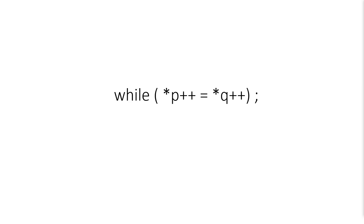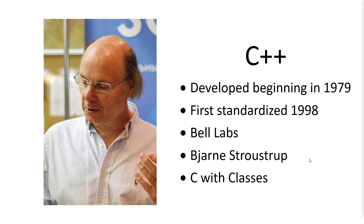Programmers could even suggest the use of particular CPU registers — I thought that was fascinating. Following the development of C, Bjarne Stroustrup developed C++ beginning in 1979, based on C. It was first standardized in 1998, and we've seen several other standardized versions adding new features. He was working at Bell Labs and was looking for an object-oriented version of C, designed to be upward-compatible so that C code could run in C++.